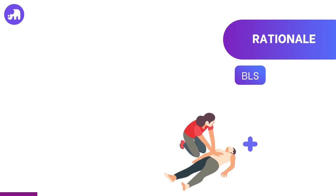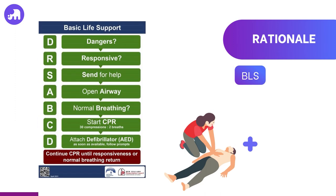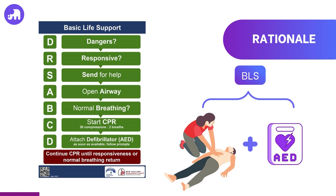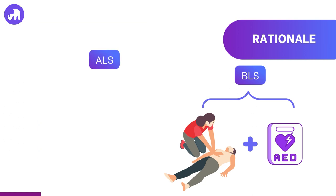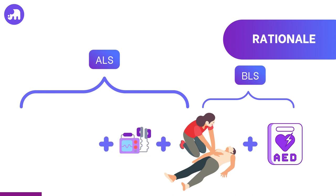Basic life support is the preservation or restoration of life by the establishment of and/or the maintenance of airway, breathing and circulation. Adjunctive equipment is not necessary to perform BLS. That said, the ANZCOR guidelines include the use of automated external defibrillators or AEDs within the scope of BLS. These are the appropriate defibrillators to be used by first responders who are likely to lack expertise in the recognition of life-threatening cardiac arrhythmias. ALS, then, is basic life support with the addition of invasive techniques, including defibrillation, advanced airway management and intravenous access and drug therapy.